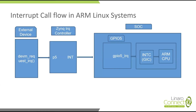Now we are starting the actual interrupt call flow in ARM Linux systems. I have given a diagram where I try to capture how the actual flow will start from the independent kernel to the platform-dependent kernel towards the ARM CPU core. One external device which is going to request an IRQ with the help of devm_request_irq or request_threaded_irq — request_irq will internally call request_threaded_irq. That will be going towards the hardware IRQ chip. In this presentation I am taking the example of Zinc IRQ controller, but we can take any hardware IRQ. This request_irq will be going through our Linux IRQ subsystem.